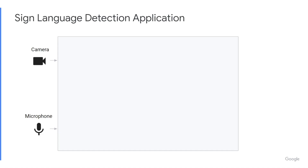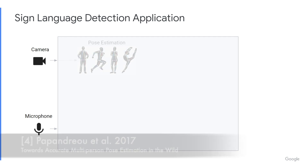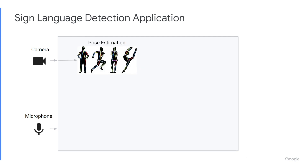Around our model, we built an app running in real-time in the browser. We start by using PoseNet human pose estimation with TensorFlow.js. For speed, we decided to only use the body landmarks, which are much faster to acquire, and only result in 1% accuracy drop compared to all landmarks.